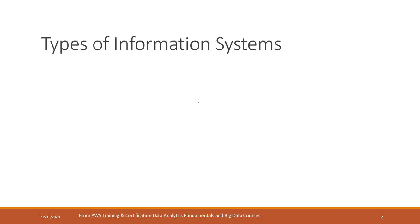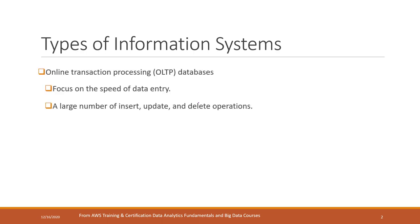Before I start, I just wanted to introduce that normally there are two types of information systems. The first one is called online transaction processing system, or processing database, or sometimes we just call it OLTP.